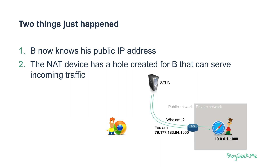So two things happened. Brownhead on the right now knows his public IP address, and by knowing that, he created a pinhole in the NAT device so that traffic from Redhead can come through to him.